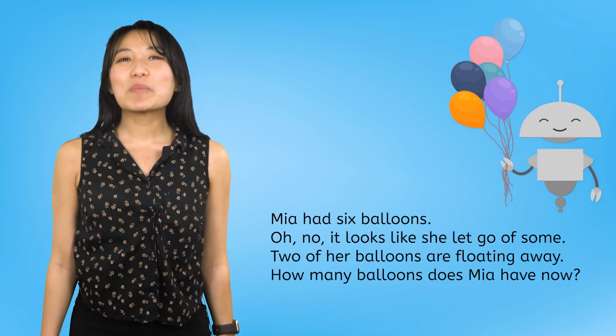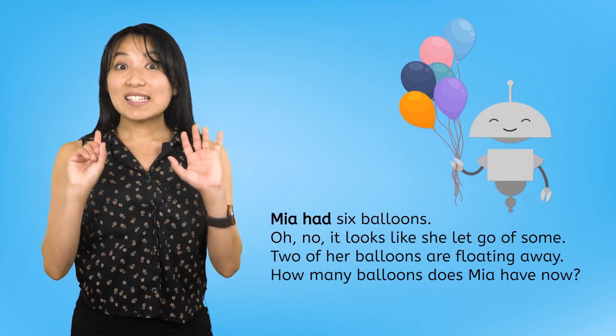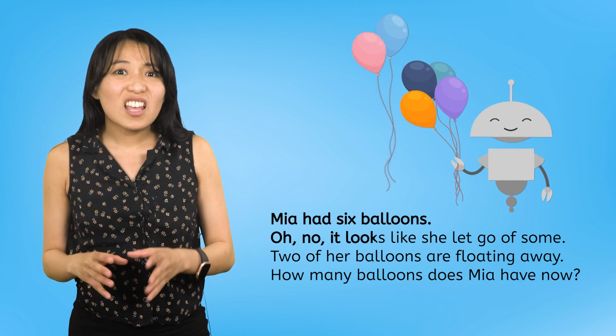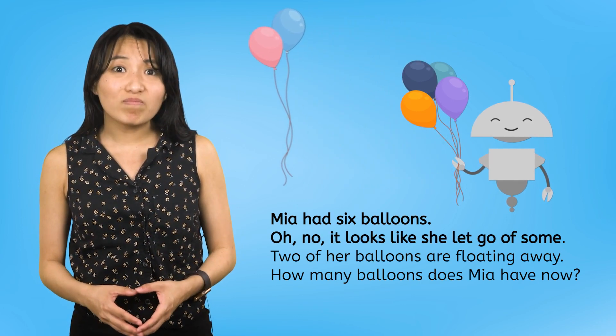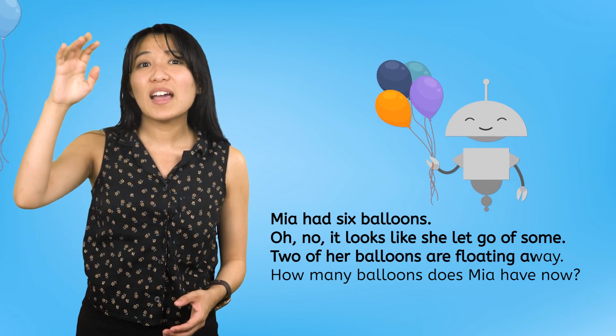Let's start with a number story. Here is Mia with her balloons again. This time Mia had six balloons! Oh no! It looks like she let go of some. Two of her balloons are floating away.